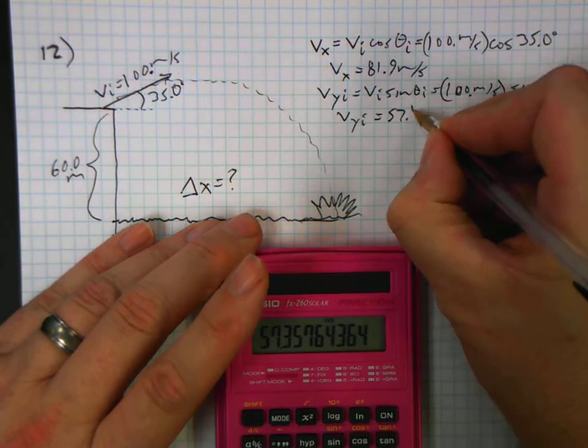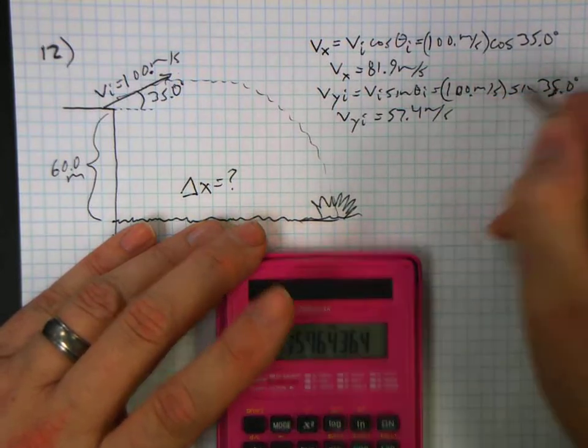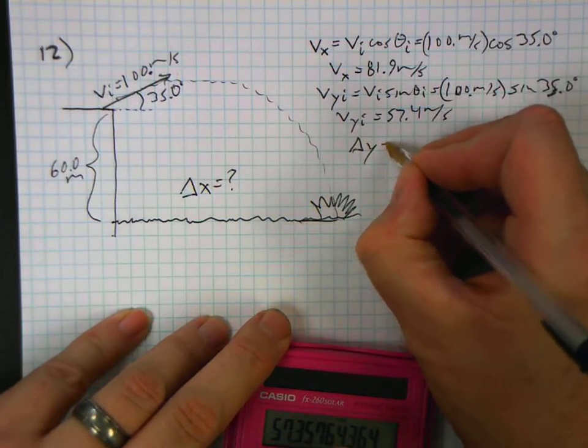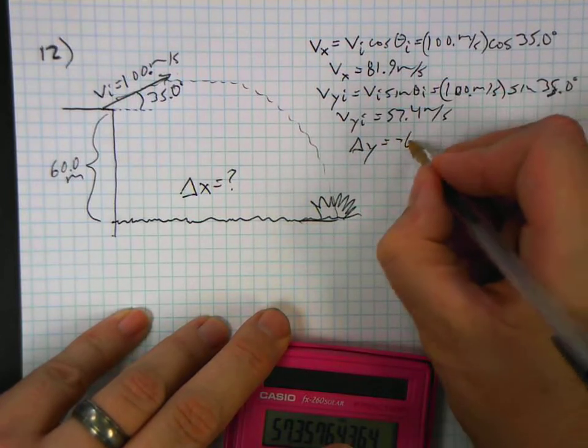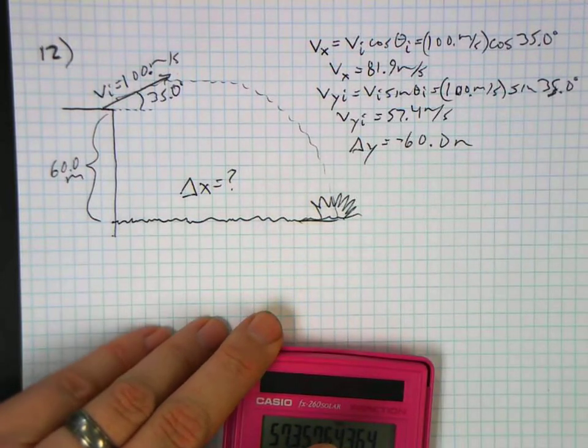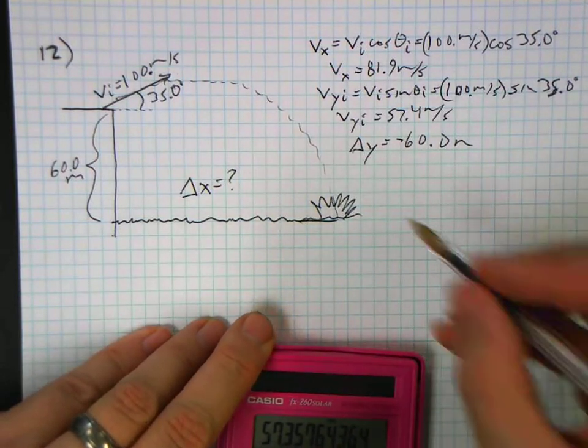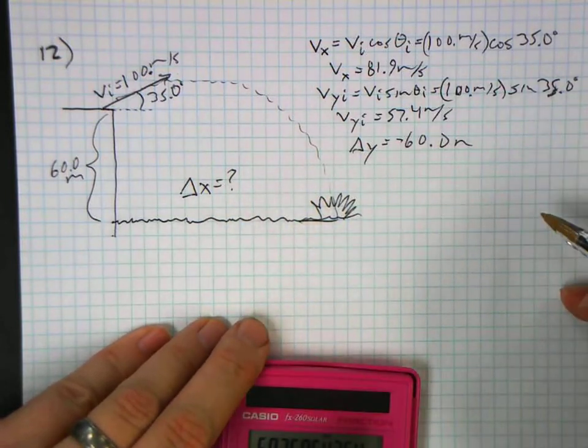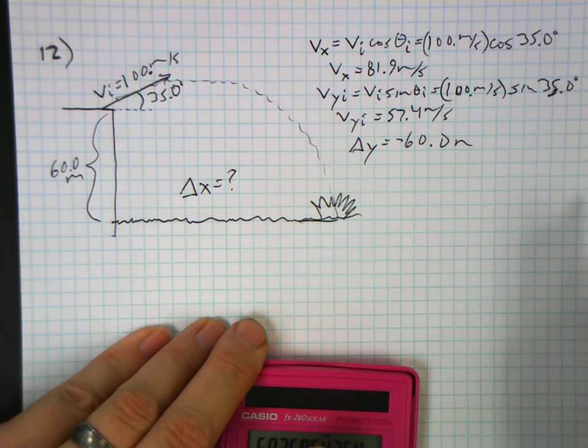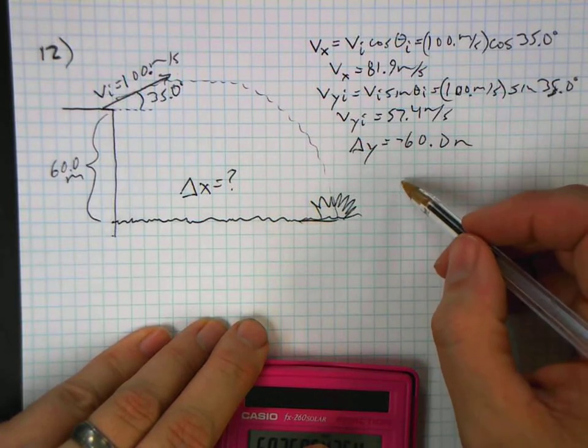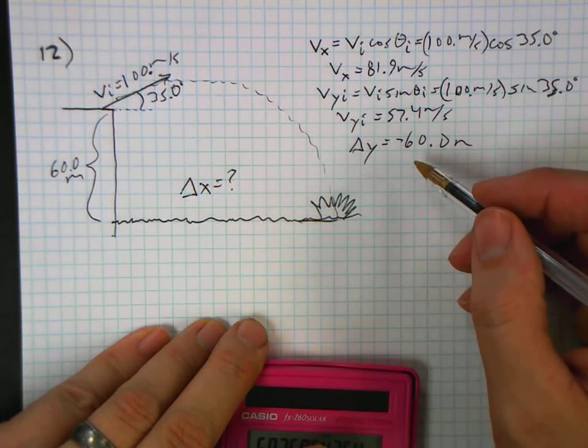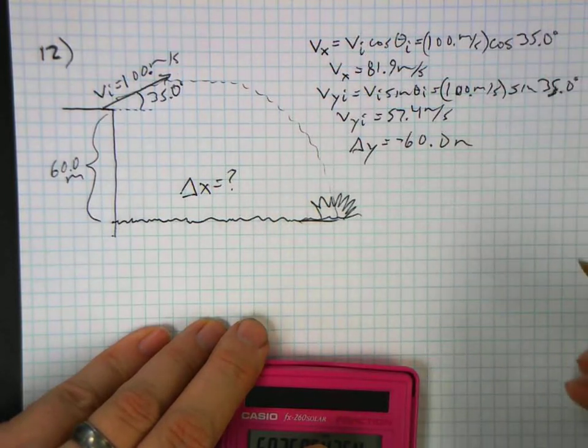Other variables that we know: delta y is equal to negative 60.0 meters because we end up 60 meters lower. And of course, g is equal to the acceleration in the y direction. So in the x direction... a little less noise, thank you. Trying to record this for your use later.